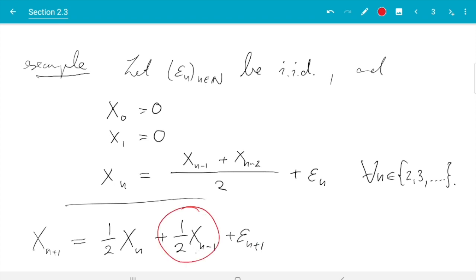Because of this term here it makes a difference what value Xn-1 had, so if we know that, that tells us something about Xn+1. Then one can show, I'm not going to do that in detail, that that process is in fact not a Markov chain.